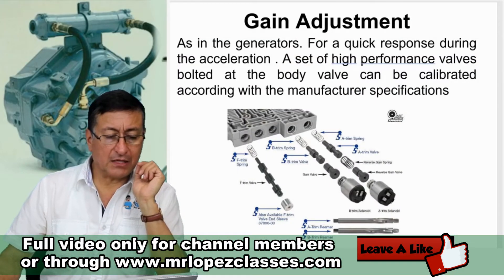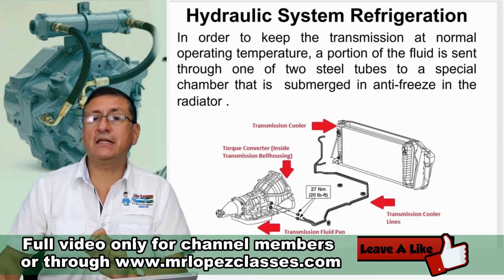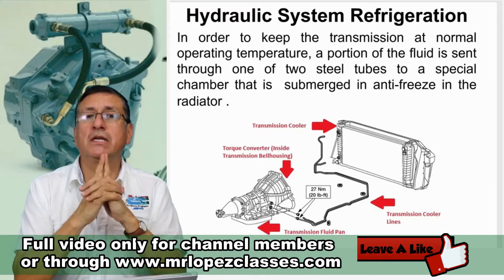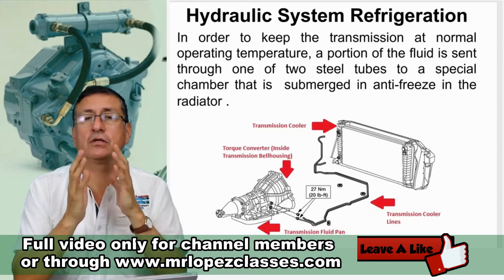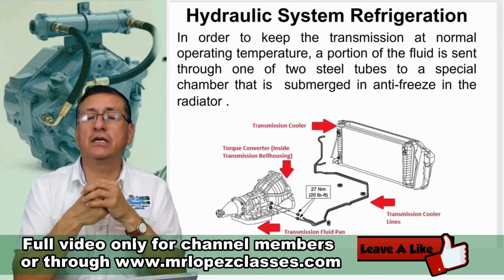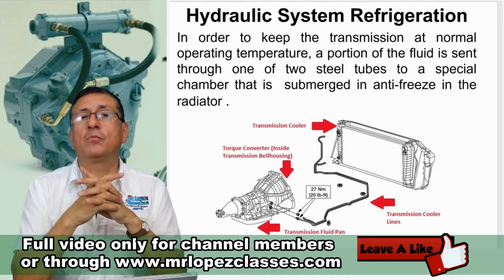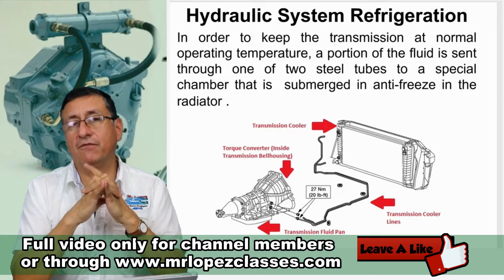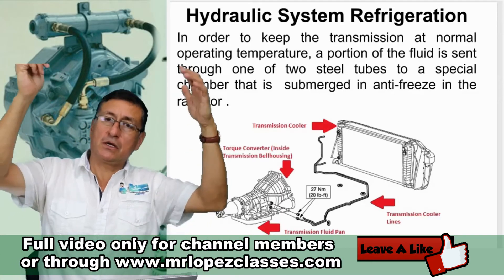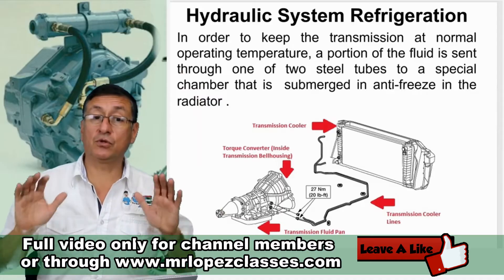Another important element to analyze is temperature. The temperature of the fluid in an automatic transmission is critical. If not, the friction material is eroded and immediately you have problems. In automotive applications, the fluid goes out to the radiator, and the radiator reduces the temperature of the oil, and the oil returns into the transmission at low temperature.